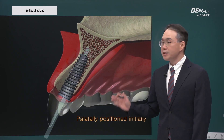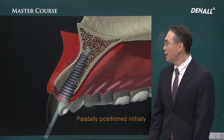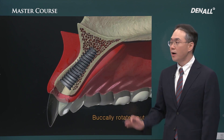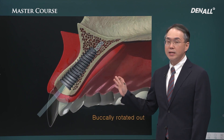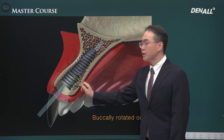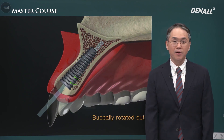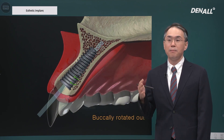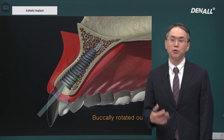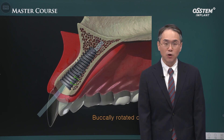As shown, the TS3 tapered body implant has a top that is wider than the apex. When we place the implant or adjust the depth, the palatal bone is quite hard and dense, and therefore the implant becomes buccally rotated. Unless we intentionally place it palatally, as we place the implant it will be buccally rotated — as shown in the previous slide, it is bound to be angulated towards the buccal side.